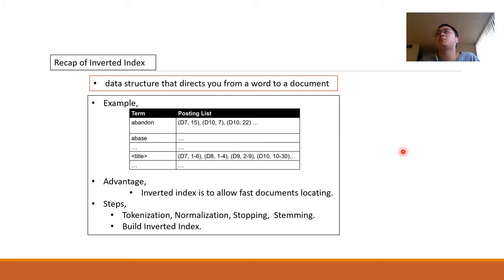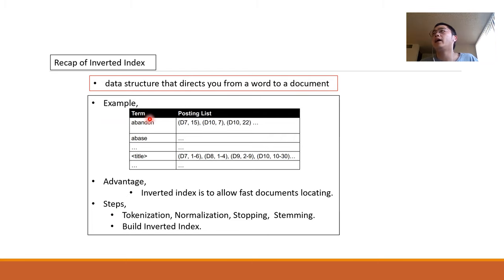First, let's do a recap on Inverted Index. Inverted Index is a data structure that directs you from a word to a document. For example, we have the word 'abandon,' and with Inverted Index we know that 'abandon' occurs in Document 7 and Document 10. In Document 7 it's at the 15th position, and in Document 10 it appears at the 7th and 22nd positions.